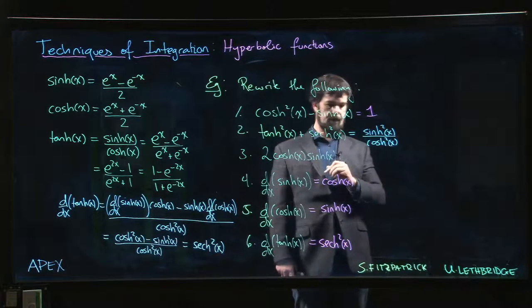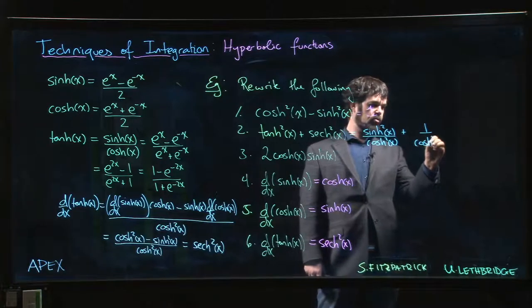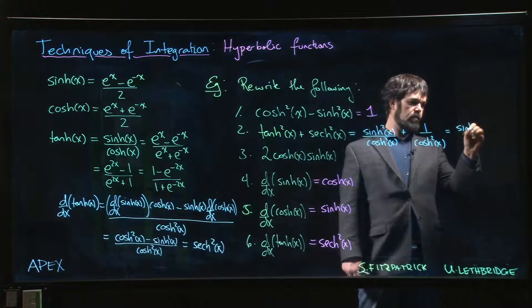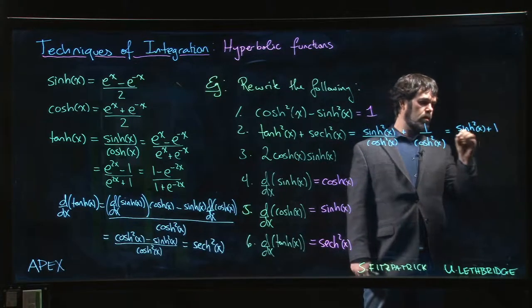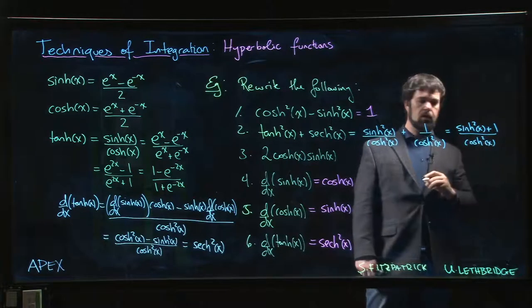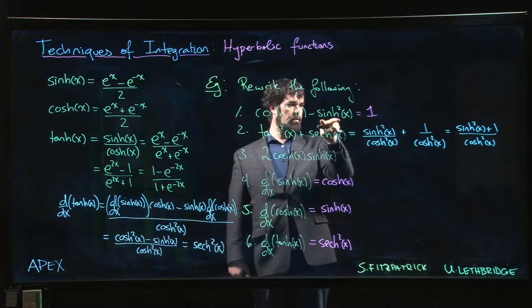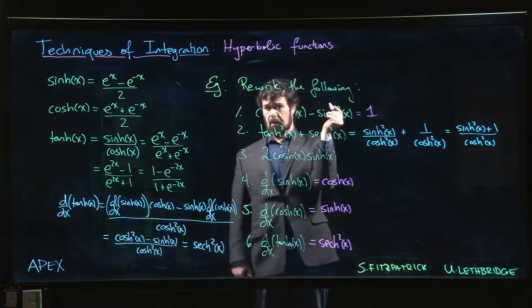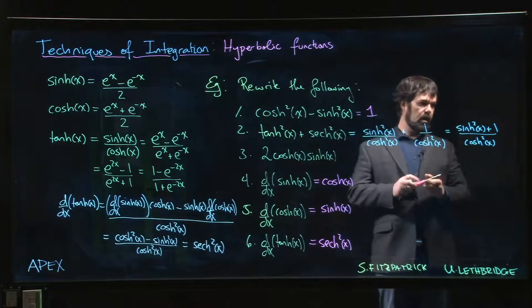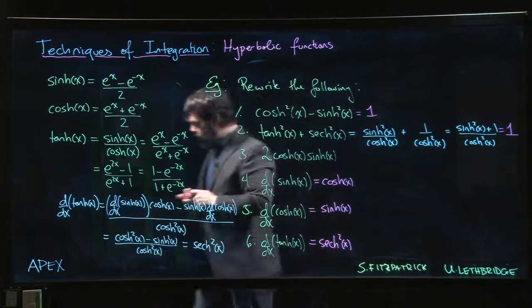squared, plus one over cosh squared. So sinh squared plus one over cosh squared. But come back to here - hyperbolic sine squared plus one is hyperbolic cos squared, so this is hyperbolic cos squared over hyperbolic cos squared, so this is also one.